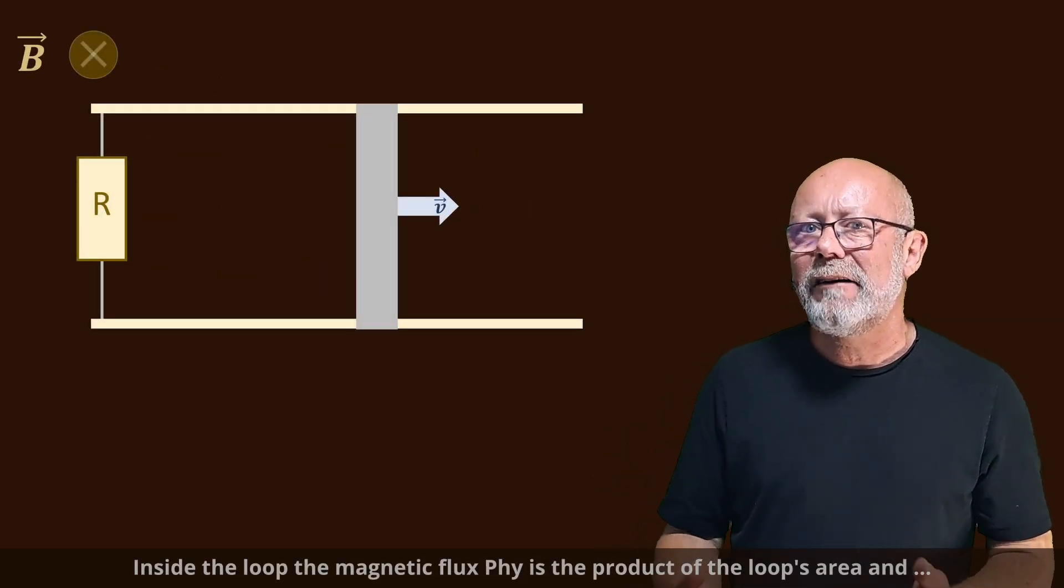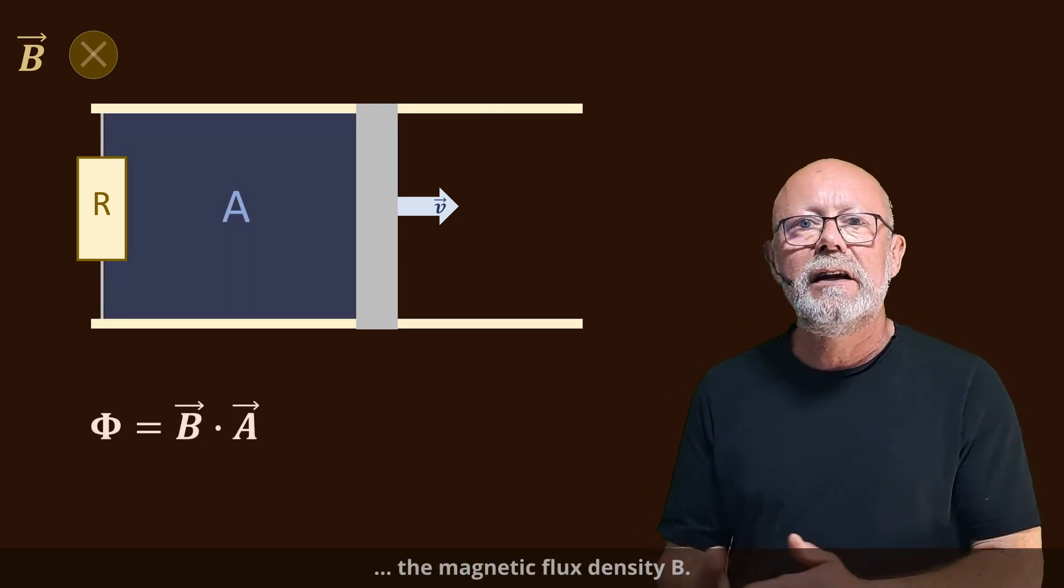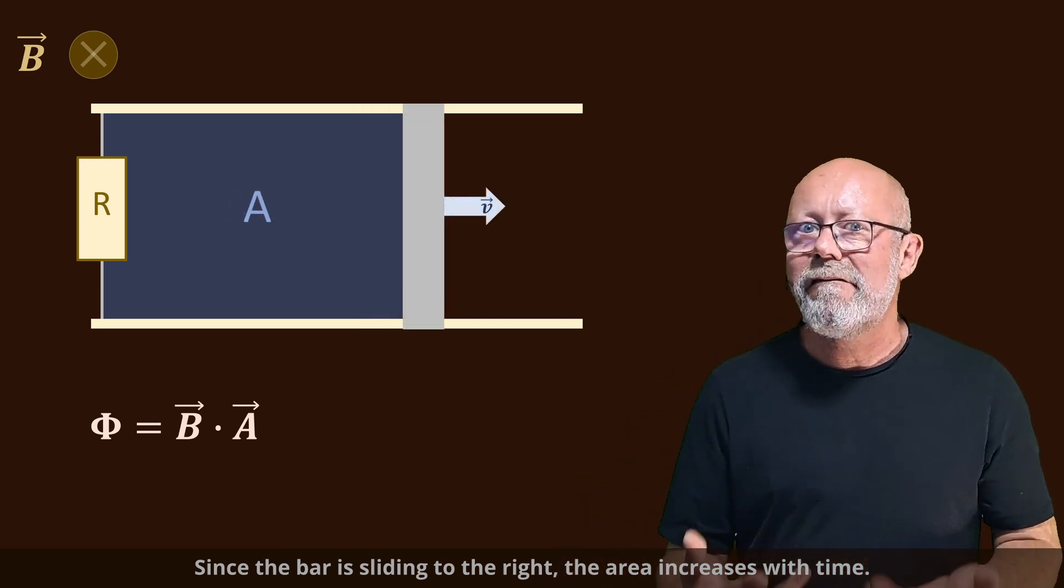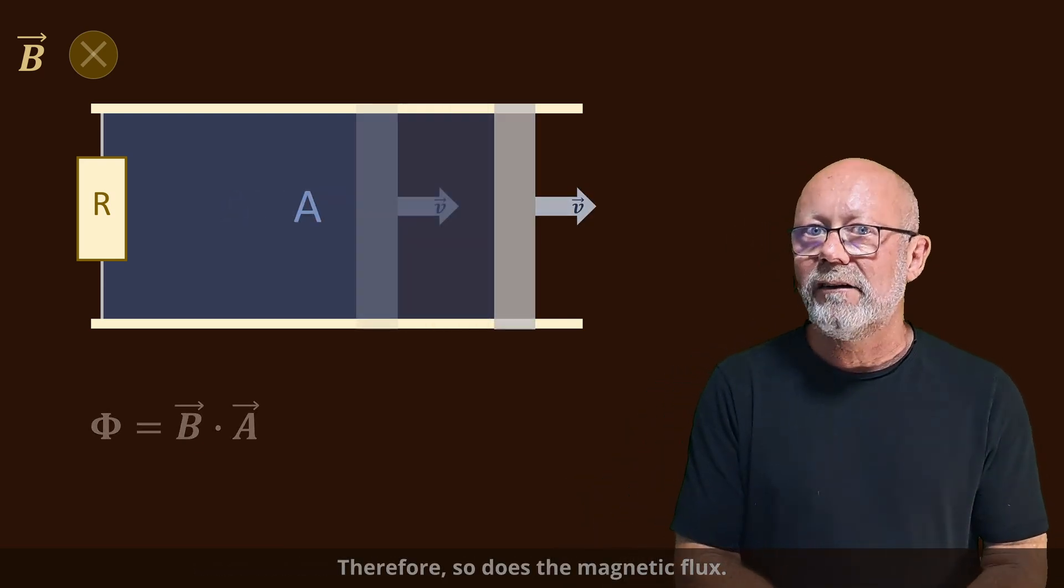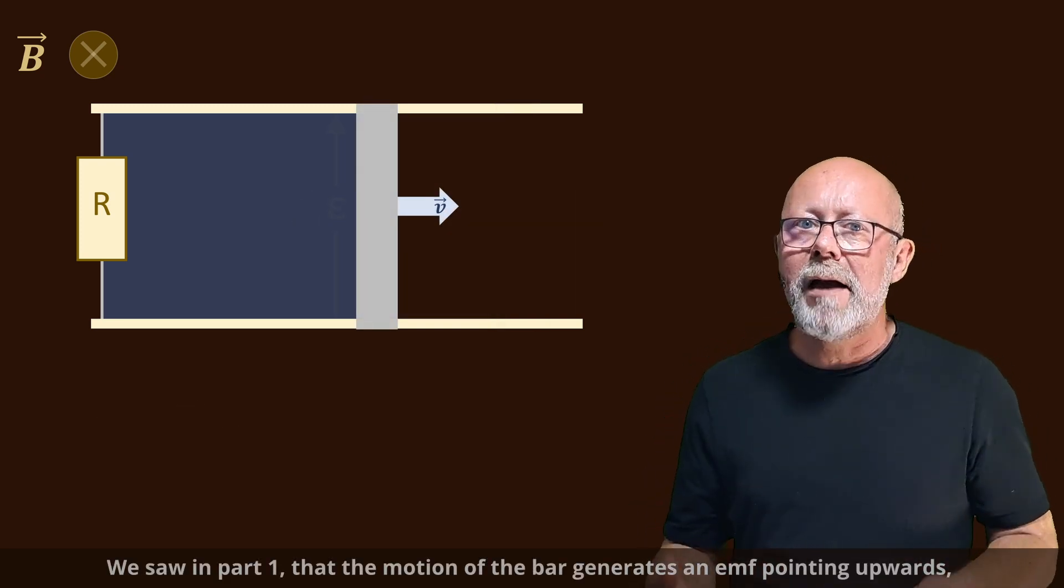Let's stick with that setup. Inside the loop, the magnetic flux phi is the product of the loop's area and the magnetic flux density B. Since the bar is sliding to the right, the area increases with time. Therefore, so does the magnetic flux.